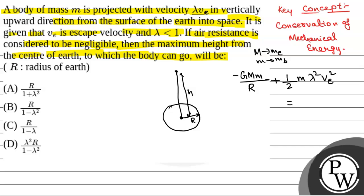finally there is only potential energy. So that is minus GMm by h. It will be final potential energy.